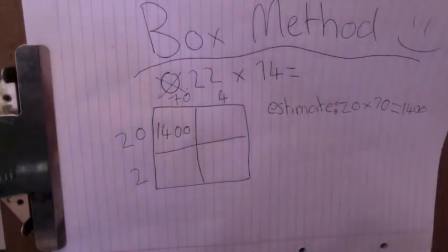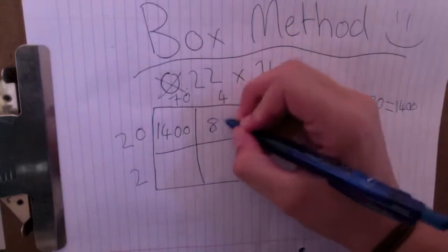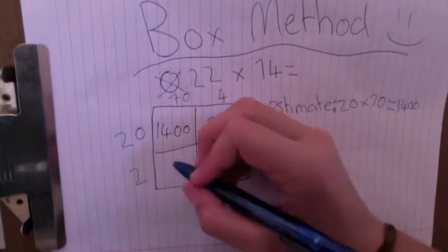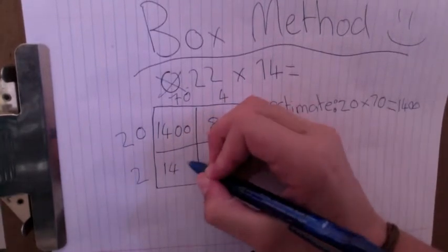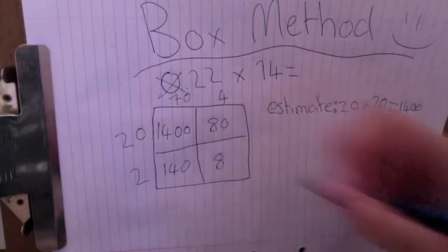And then 20 times 4, that's 80. 70 times 2, 140. 2 times 4 is 8.